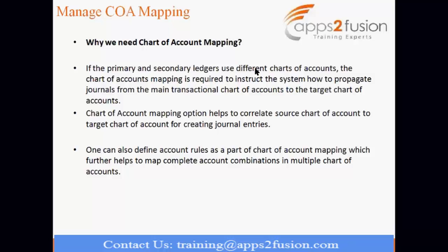It is nothing but mapping one chart of accounts to another. For example, in one chart of accounts you have three segments — company, department, and account — and in another chart of accounts you have four or five segments such as company, department, account, and product or line of business. So you need to map these two chart of accounts to bring values to each other. You will have a source chart of account and a target chart of account. If you are defining a secondary ledger, your source will be primary and target will be secondary.